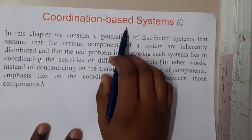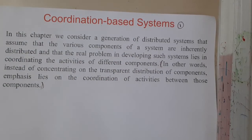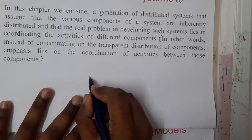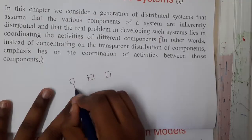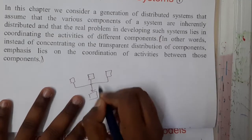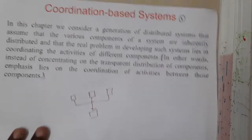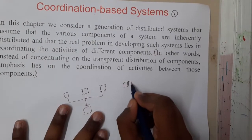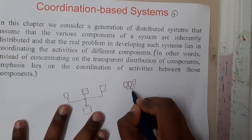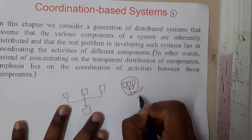In this lecture we'll be discussing the introduction about coordination-based systems. So what is a coordination-based system? Assume till now we discussed about distributed systems — multiple systems communicating among themselves and helping to get data, distributed across multiple places. Here, coordination means two or more systems will coordinate among themselves to give a result.